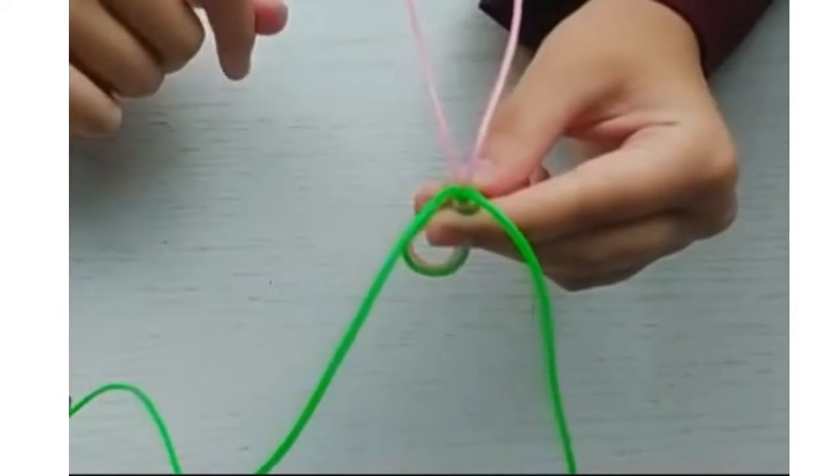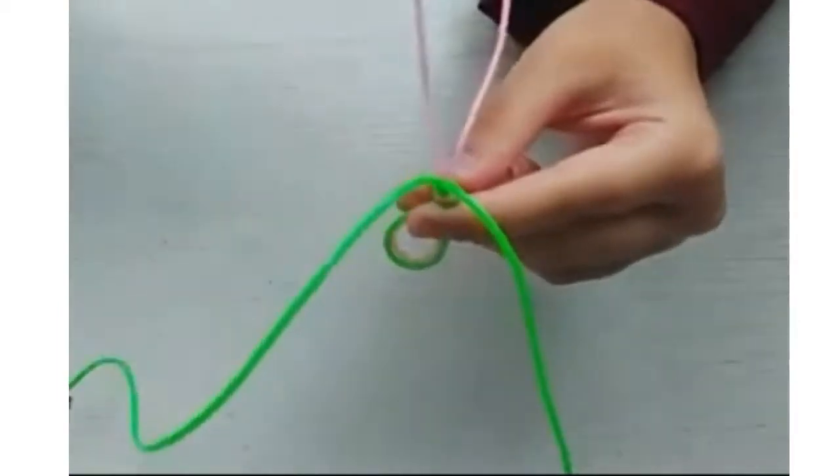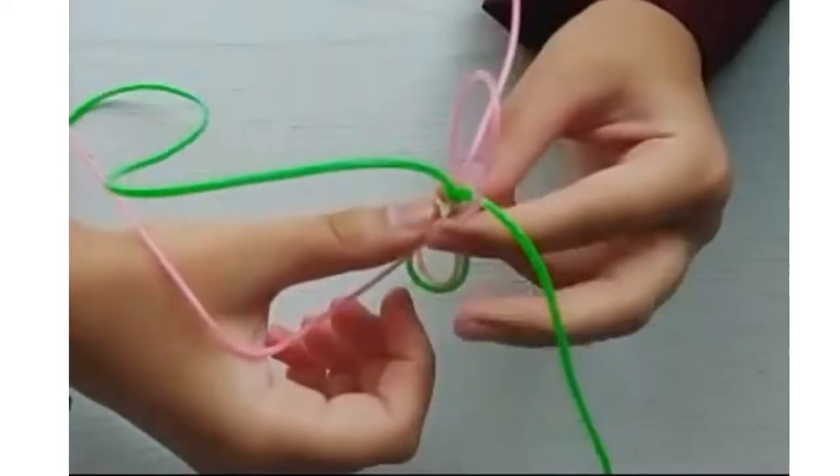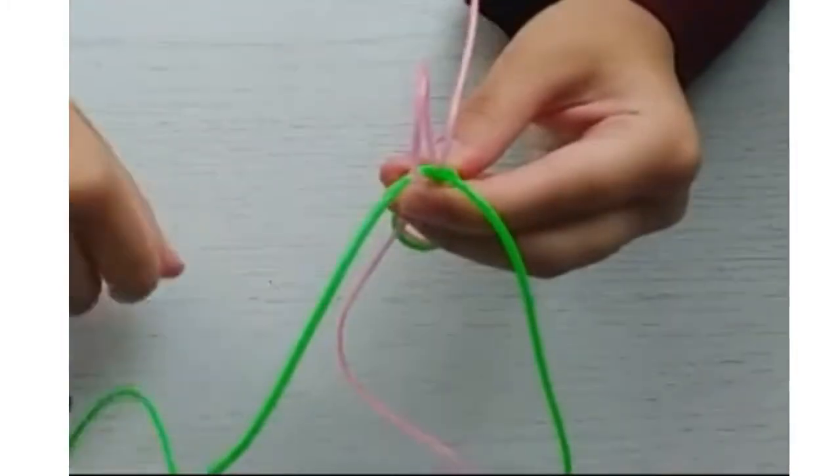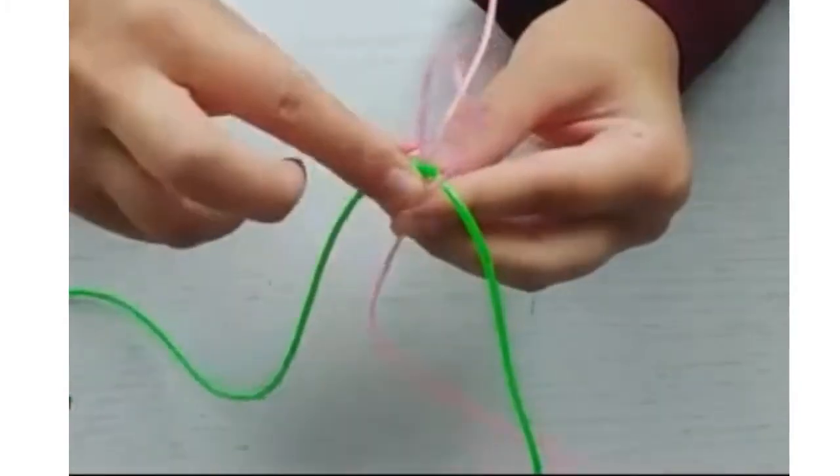Loop the first colour in between the two colours opposite. Then get the opposite colour and loop it towards you.